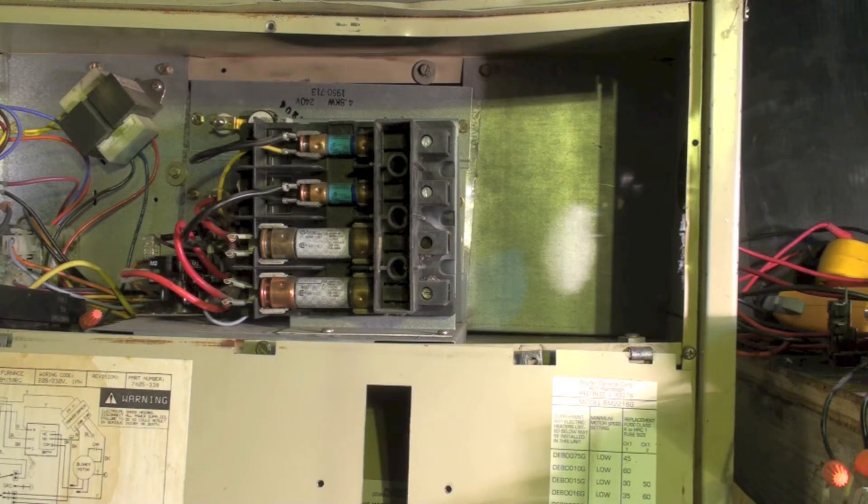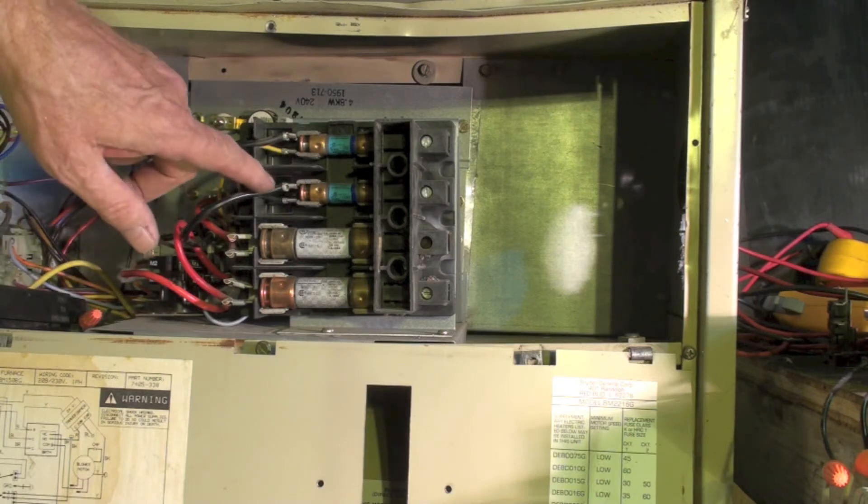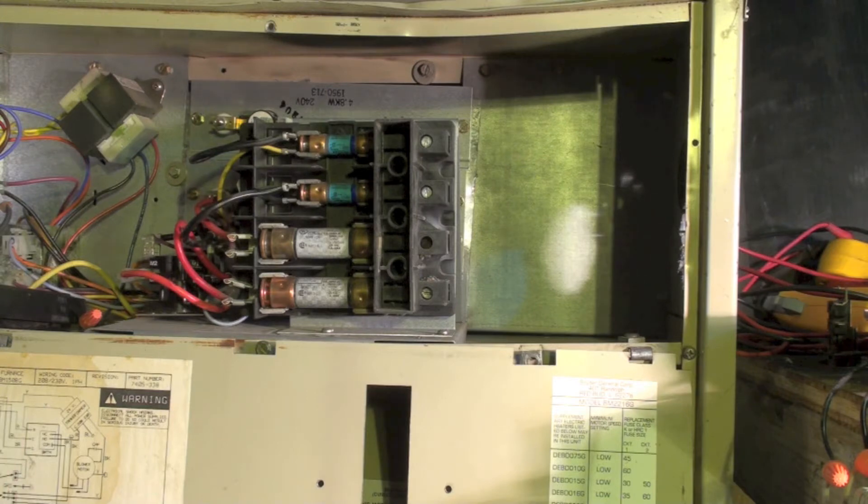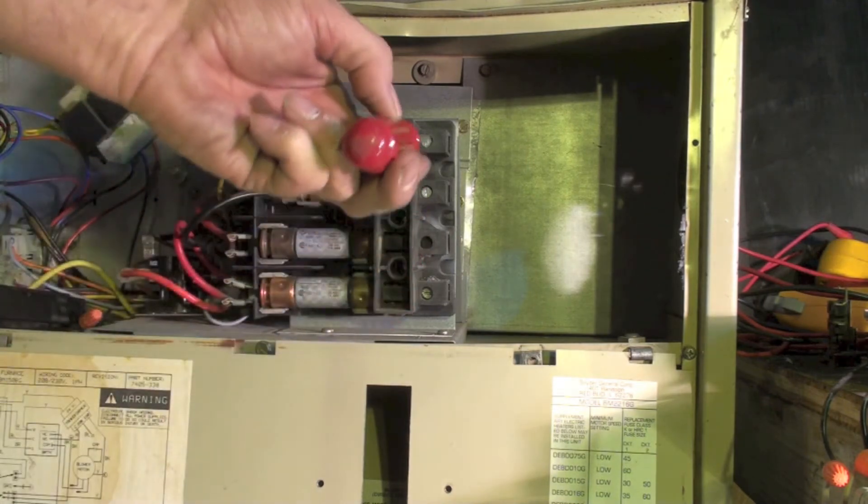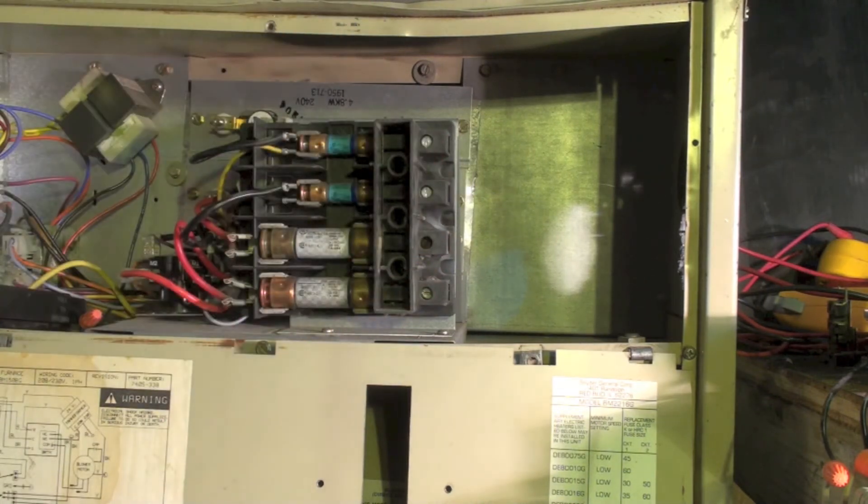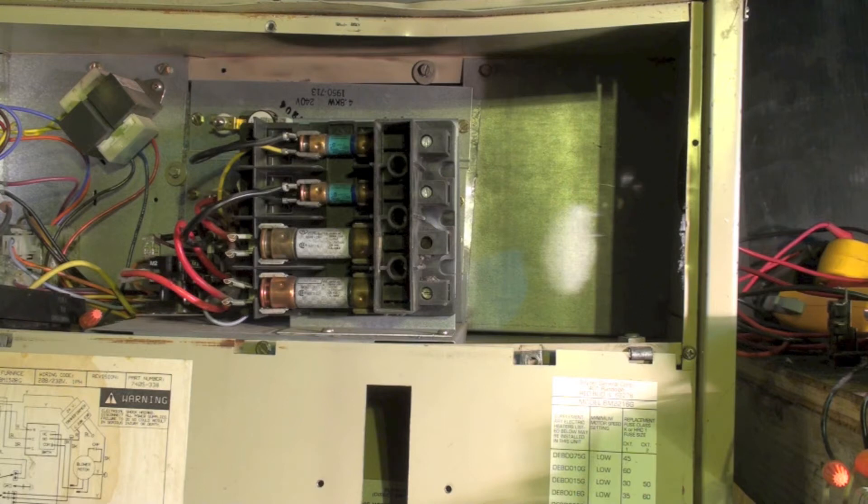Look for burned ends on the wires, that sort of stuff. Remember, pulling this out, which pulls the power to the furnace, does not cut the power here. So you got to go to the panel and shut it off in the panel. Anyway, tight connections, especially aluminum - aluminum was supposed to have the glop on it.